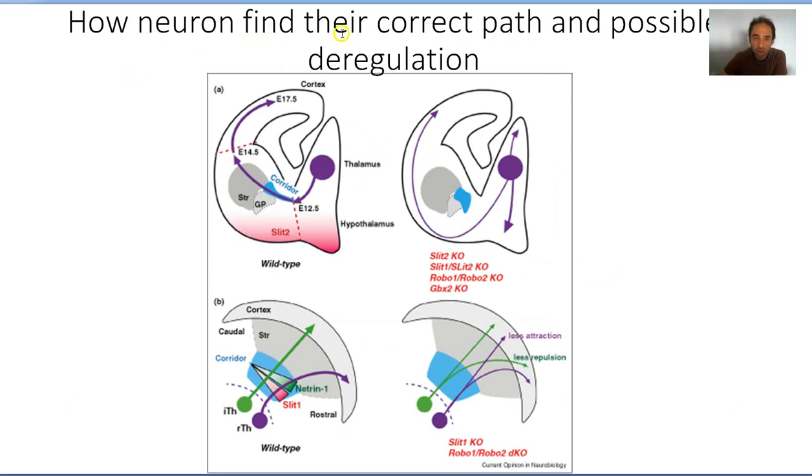How neurons, in general, can find their correct path, and what are the possibilities for deregulation. Here I showed you two very classical examples, where you have neurons from the thalamus that has to project to the cortex and go through this corridor, and they have to be expressed, they go through this region where some morphogens are expressed in a gradient.